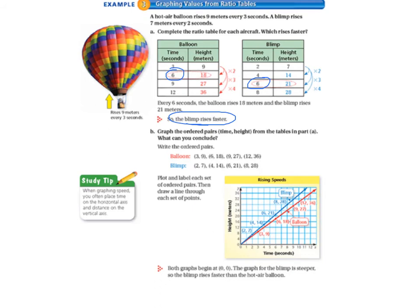Now that we have the ratio tables, we're asked to graph the ordered pairs, which is the time and the height from the tables in part A. And then we need to make a conclusion. So first we are going to write the ordered pairs. So those are written out for us. The balloon is 3, 9, 6, 18 and so on. And the blimp is 2, 7, 4, 14. And we need to remember that we always go across first and then up when we're graphing.